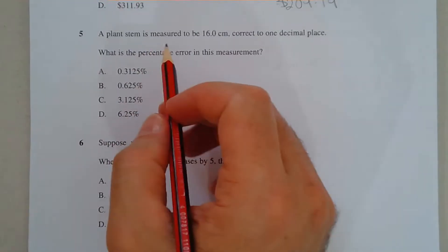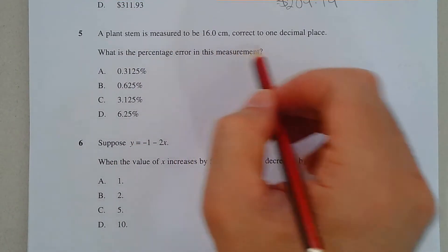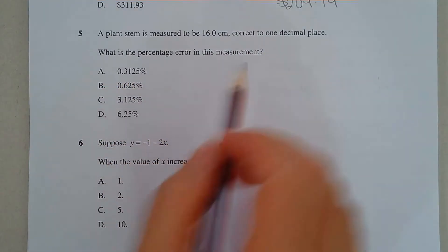Question 5. A plant stem is measured to be 16.0 cm, correct to one decimal place. What is the percentage error in this measurement?